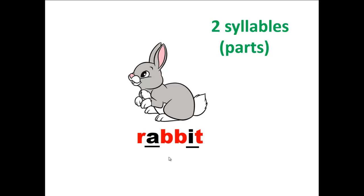As you know, each syllable or each part of the word must have only one vowel sound. So since this word has two vowel sounds, it is made up of two syllables or two parts. But the question is how should the word be divided? First of all, let's check the order of the vowel and consonant sounds in that word.